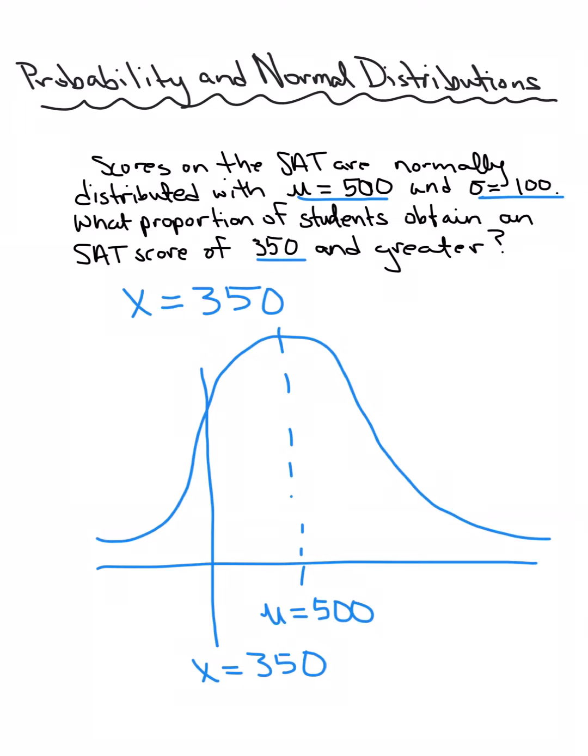If we're looking at what proportions of students obtain an SAT score of 350 and greater, we want to go ahead and highlight everything from 350 and above, including on this other side of the distribution, the far side of this distribution. To be able to find out the proportion...